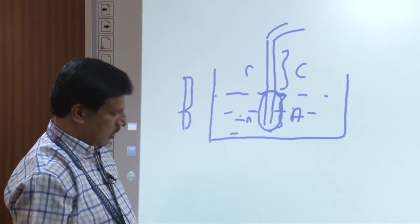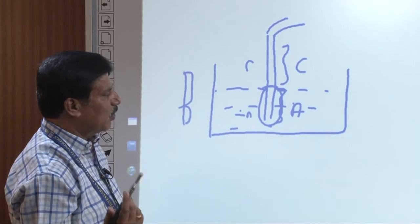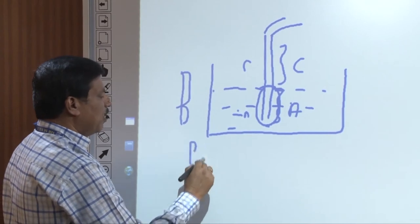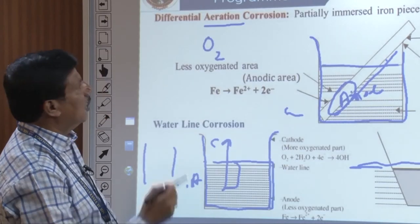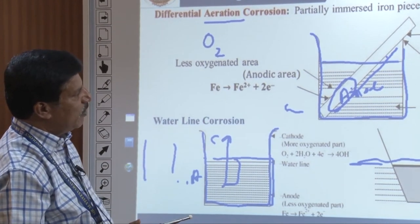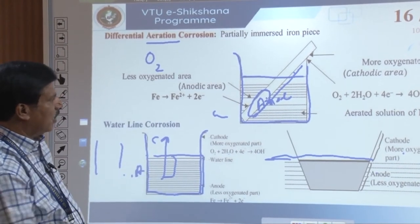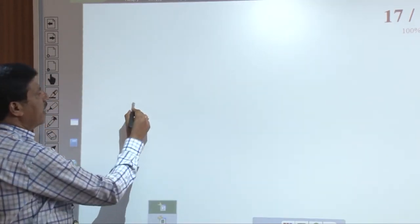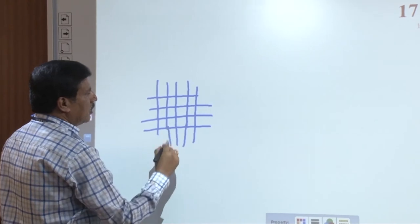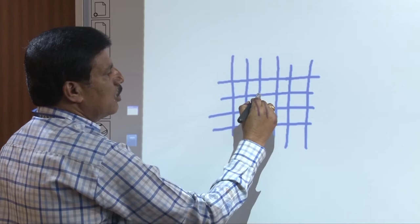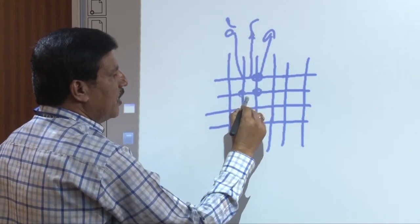This is why Bangalore Water Supply and Sewage Board has decided not to use metallic pipes to avoid corrosion. Earlier, people used metallic pipes; now PVC pipes are used to avoid differential metallic corrosion. Wire mesh joints also corrode faster than other parts because the joints are in a less oxygenated area, behaving as anode, while the rest behaves as cathode.